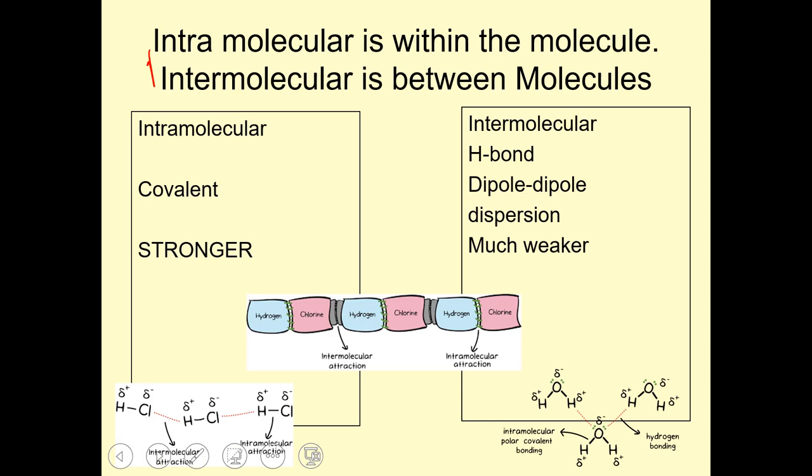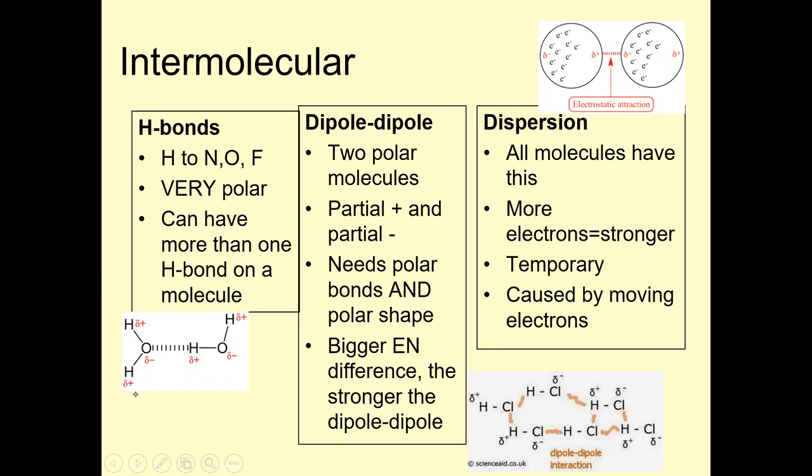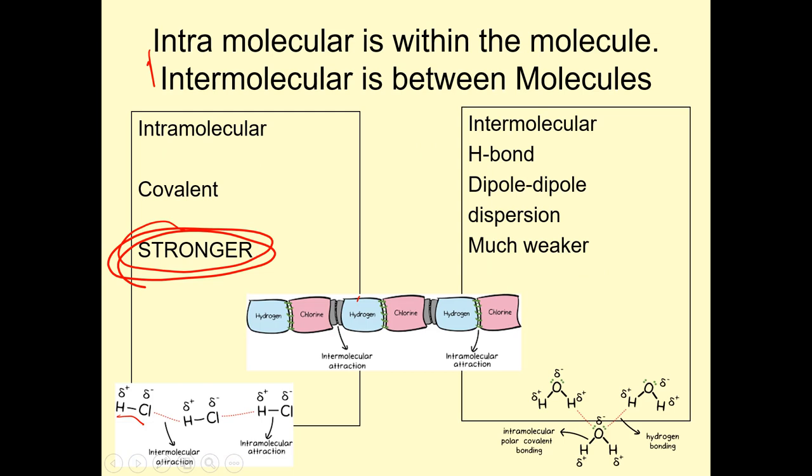Intramolecular forces within the molecule. That is strong. Intermolecular is between molecules. So if I have the substance hydrogen chloride, this bond is strong. This bond is weak. See how it's farther away. This one is strong, see how it's closer and is even written as solid. And then the longer one is weaker. See how this one is stitched together, space, right?